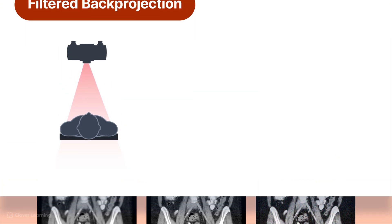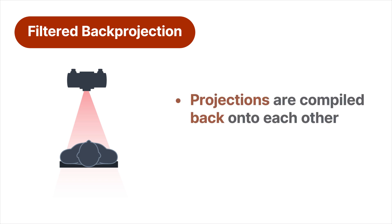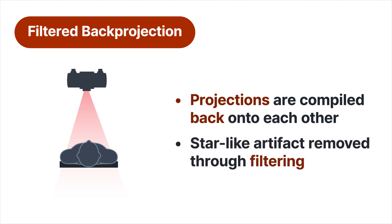The last step in the reconstruction process is something called filtered back projection. Before this convoluted information can be viewed, it has to undergo this process. The name is self-explanatory - this is the process through which projections are compiled back onto each other. And the reason it's called filtered back projection is in CT, we use a special mathematical filtration process that removes a star-like artifact that would otherwise be present through the back projection process. Remember in CT scanning, an individual slice is actually the compilation of multiple projections or views from around the patient. All of these views or projections do have to be compiled back onto each other, and it's through the process of filtered back projection that we make that happen.